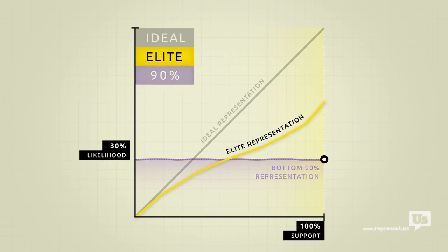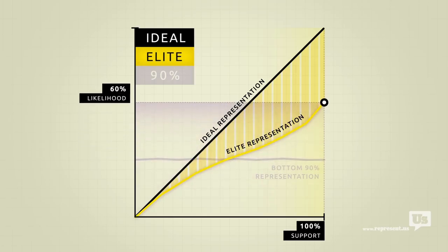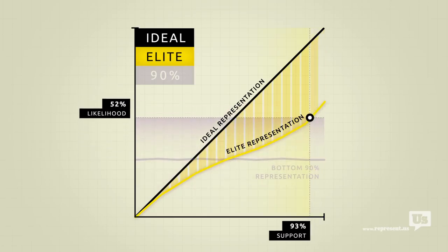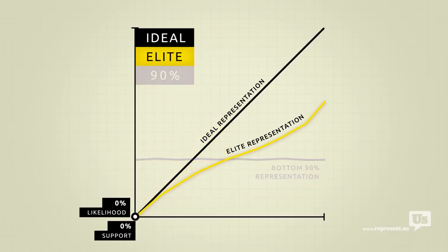Look at how much closer their line is to the ideal. When they want something the government is much more likely to do it. And when they don't, they have the power to completely block it from happening, no matter how much the rest of the country supports it.